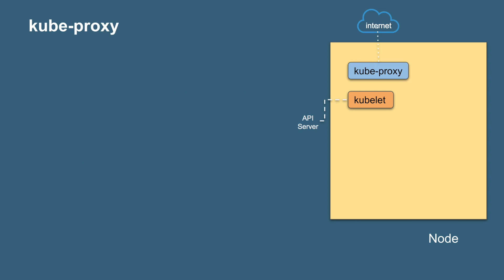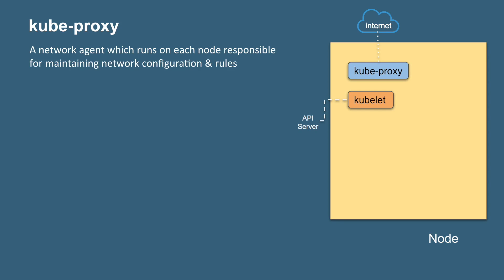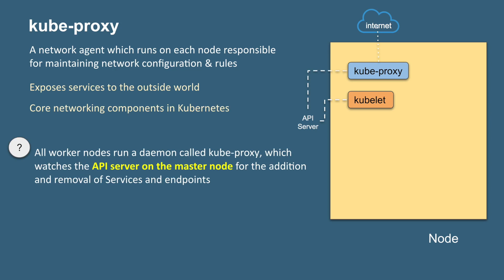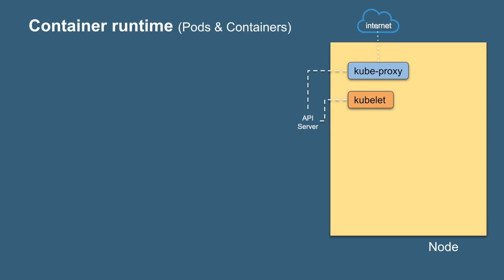Kubeproxy is the core networking component in a node. It can also interact with the external world and is responsible for maintaining the network configuration and rules. An important interview point: all nodes run a daemon called kubeproxy, which watches the API server on the master node so it can communicate with the master using the API server. It gets all information for the addition or removal of services and endpoints.